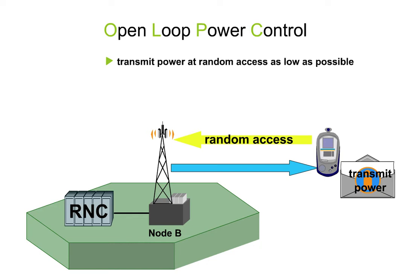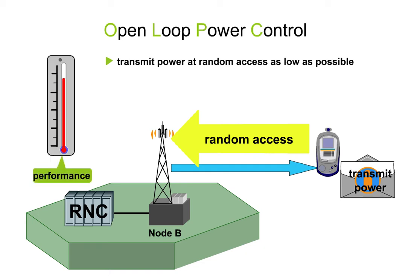Accessing the network with the maximum transmit power, like in GSM, would unduly reduce the UMTS network performance.